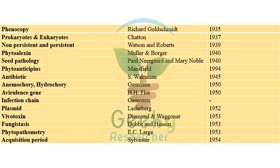'Phenocopy' by Goldschmidt in 1935. 'Prokaryotes' and 'eukaryotes' by Chatton in 1937. 'Non-persistent' and 'persistent' by Watson and Roberts in 1939. 'Phytoalexin' by Müller and Börger in 1940. 'Seed pathology' coined by Paul Neergaard and Mary Noble in 1940 — an important term frequently asked in exams. 'Antibiotics' by Waksman in 1945.